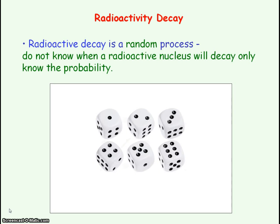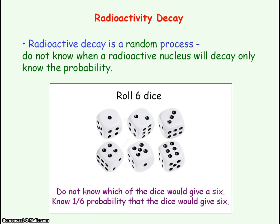We know the fraction of radioactive nuclei that will decay in a given time. And this randomness is just like rolling dice. So if we were to roll six dice, we would not know which of the dice would give a six, but we know there's a one in six probability that the dice would give a six. So we would expect one of them to give a six.